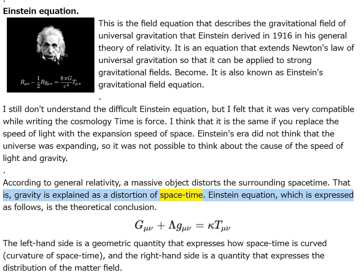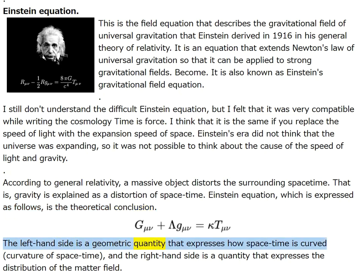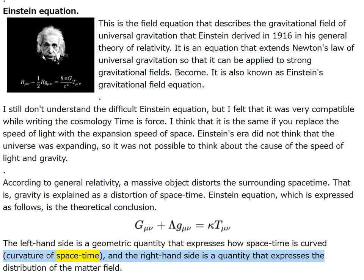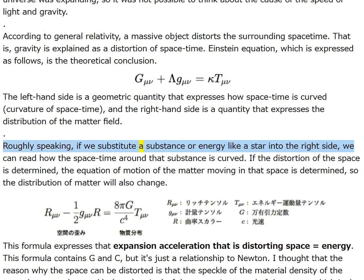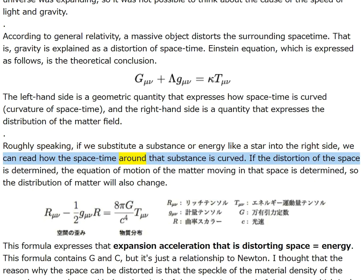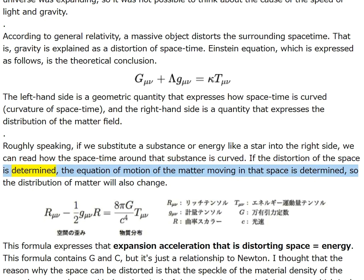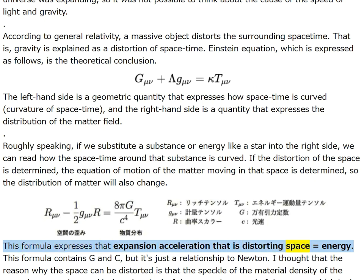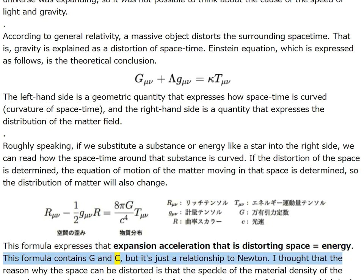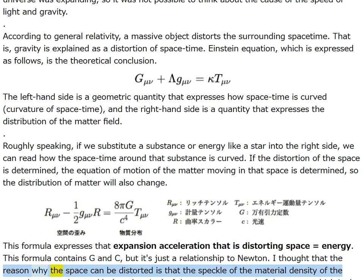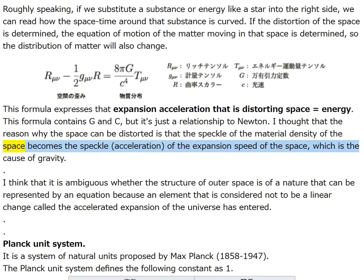According to general relativity, a massive object distorts the surrounding spacetime — gravity is explained as a distortion of spacetime. The left-hand side of Einstein's equation is the curvature of spacetime; the right-hand side is the distribution of the matter field. If we substitute a substance into the right side, we can read how the spacetime is curved. This formula expresses that expansion acceleration distorting space equals energy. I think the reason space can be distorted is that the speckle of material density of space becomes the speckle acceleration of the expansion speed — the cause of gravity.